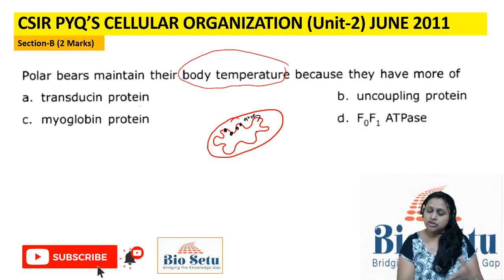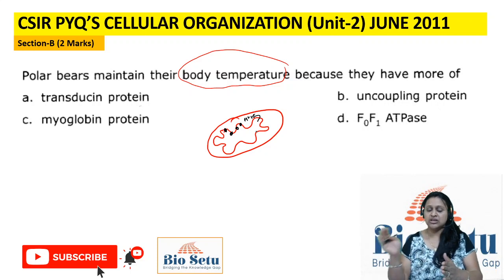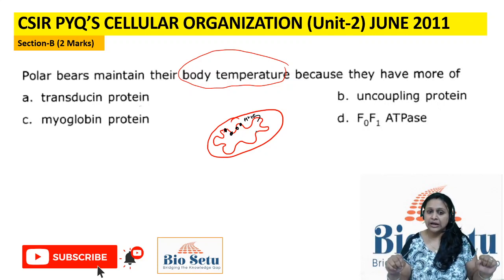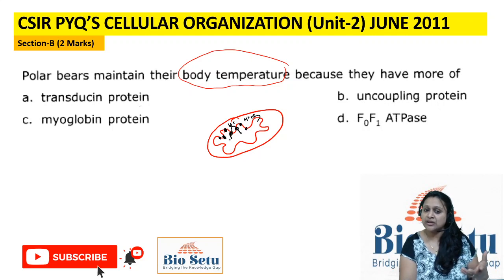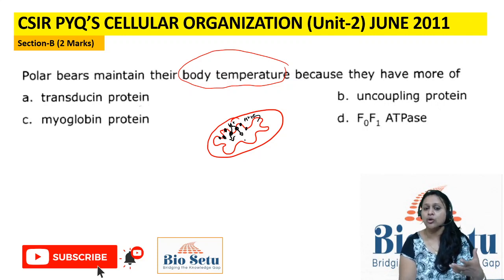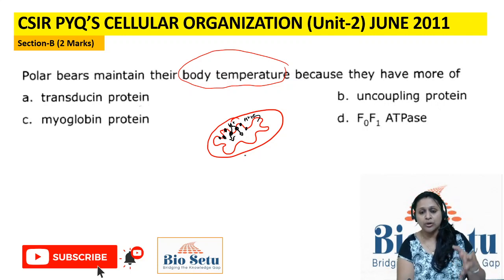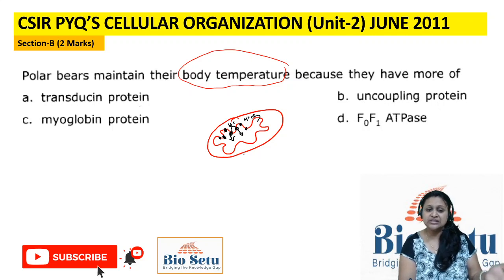When there is only one gate, everyone uses that gate, but if there are multiple channels and gates open, individuals won't be dependent on one gate. Similarly, uncoupling agents create pores so that the hydrogen ion concentration built up in the intermembrane space gets another channel to travel easily to the matrix. This means voltage difference will not be created and ATP generation will not occur, but heat is generated instead.